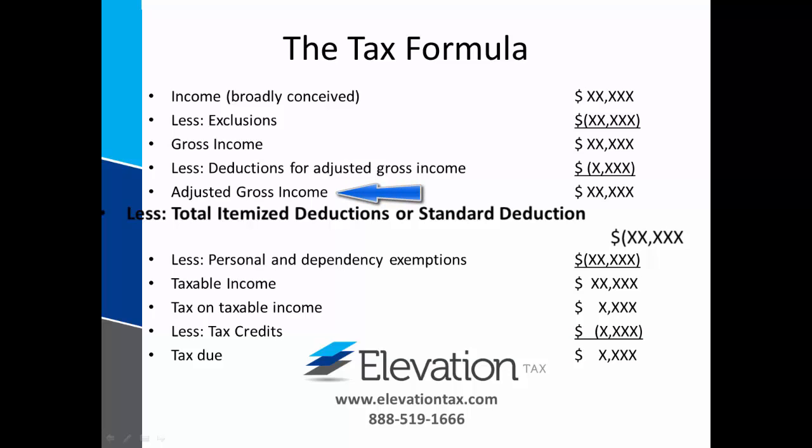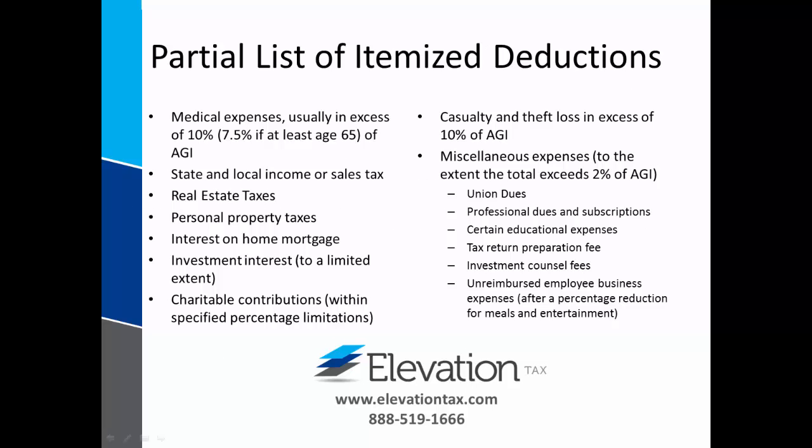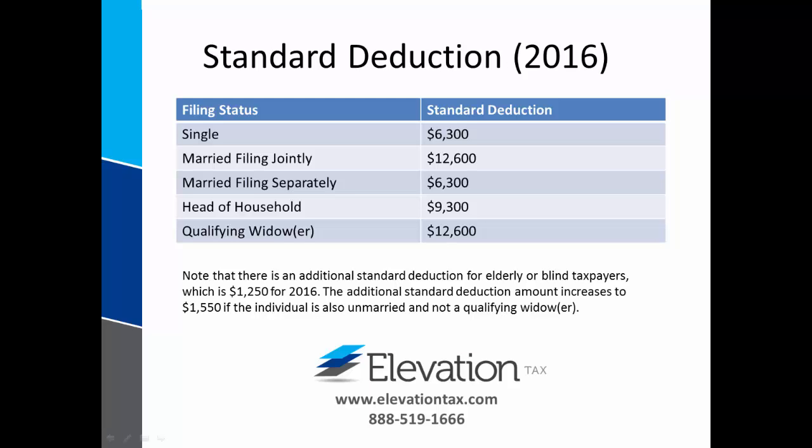As a general rule, personal expenditures are disallowed as deductions in arriving at taxable income. However, Congress allows specific personal expenses as deductions from AGI. In addition, taxpayers are allowed itemized deductions for expenses relating to: one, the production or collection of income; and two, the management of property held for the production of income. Itemized deductions include but are not limited to medical expenses, certain taxes and interest, charitable contributions, and some other miscellaneous expenses.